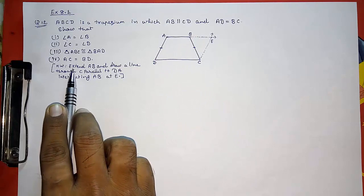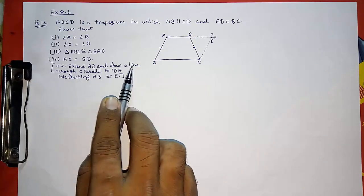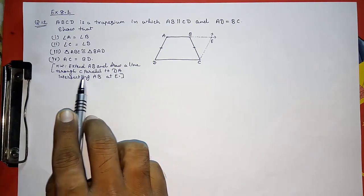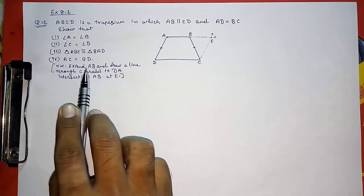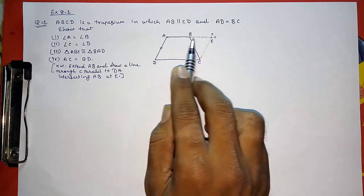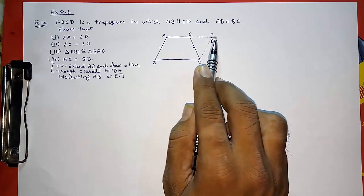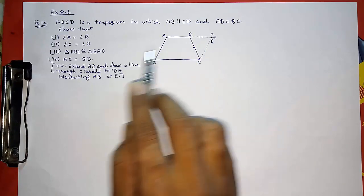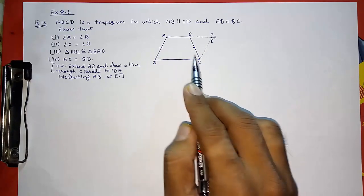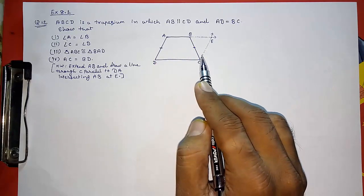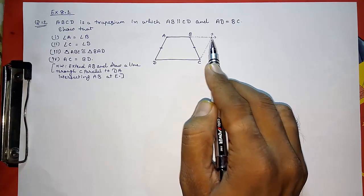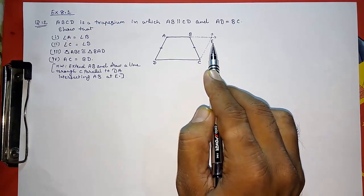They told us to extend AB and draw a line through C parallel to DA, intersecting AB at E. We extend AB and draw a line through C parallel to AD, and both lines intersect at point E.